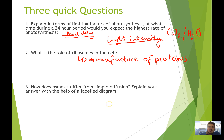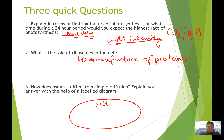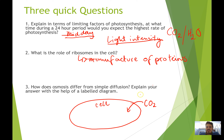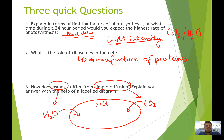How does osmosis differ from simple diffusion? In a labelled diagram of a cell, things move in and out through the plasma membrane and through proteins. Carbon dioxide outside the cell moves in due to a high-to-low concentration gradient — that's simple diffusion. On the other hand, if we have a high concentration of water outside the cell and a low concentration of water inside the cell, that water moves into the cell through osmosis, which is the diffusion of water specifically. Both types involve movement through the plasma membrane, but they differ in what is actually moving.